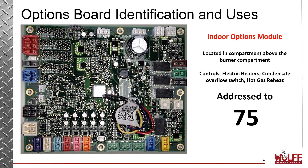Next is the indoor options module. This module is located in the compartment above the burner compartment. This controls options such as electric heaters, condensate overflow switch, and if you have hot gas reheat. This board needs to be addressed to 75.